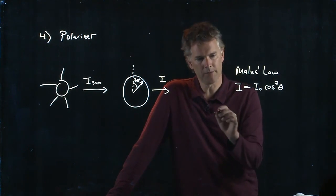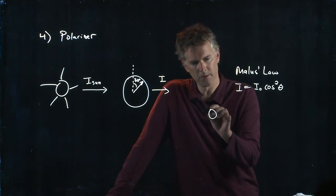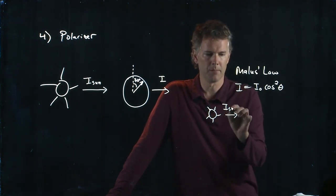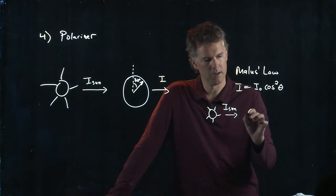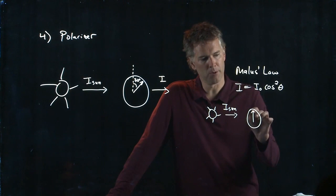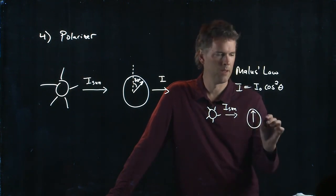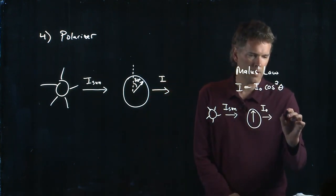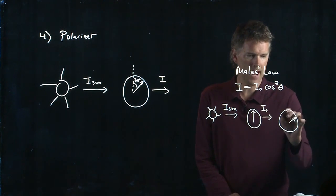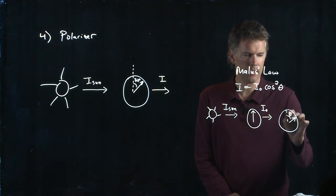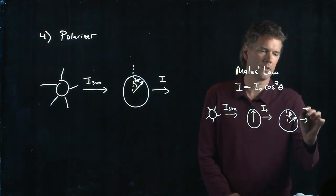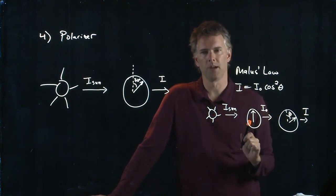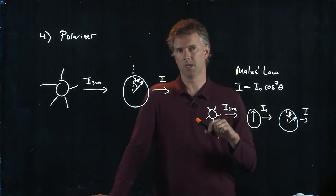And when we talked about this in class, we drew the following picture. We said, oh, here's our sunlight. There is some intensity of the sunlight coming in. I'm going to put my first polarizer up. And that means there is I naught coming through that polarizer. And I'm going to draw the second polarizer at an angle theta. And if I want to know how much is coming through, then Malus's Law holds. I equals I naught cosine squared theta. This is the one that we did in class.